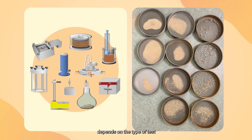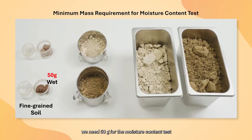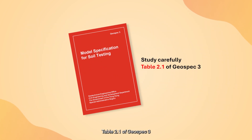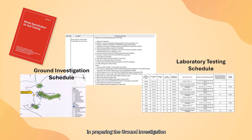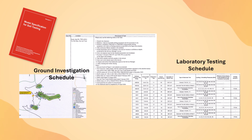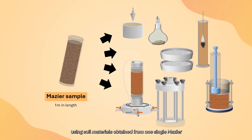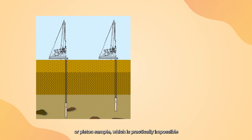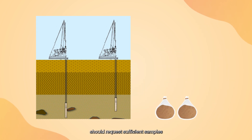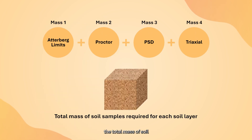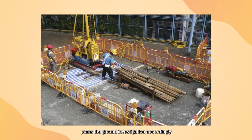The minimum mass of soil required depends on the type of test and the particle size of the soil. For example, we need 50 grams for the moisture content test for a fine-grained soil, but 4 kilograms for the same test for a coarse-grained soil. You are advised to study carefully Table 2.1 of GeoSpec 3 in preparing the ground investigation and laboratory testing schedules. The designer may sometimes request a few different tests using soil materials obtained from one single Mazier or piston sample, which is practically impossible. Instead, he or she should request sufficient samples taken from each soil layer, and it is important that the designer estimates the total mass of soil needed for testing and plans the ground investigation accordingly.